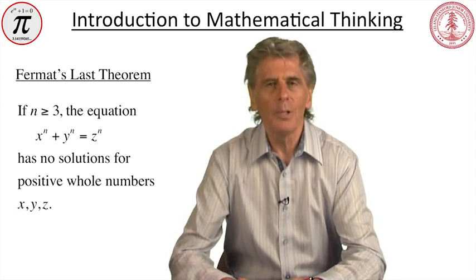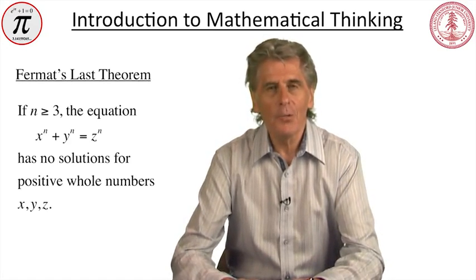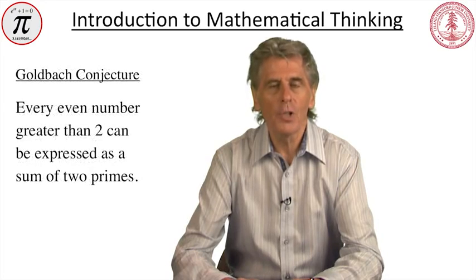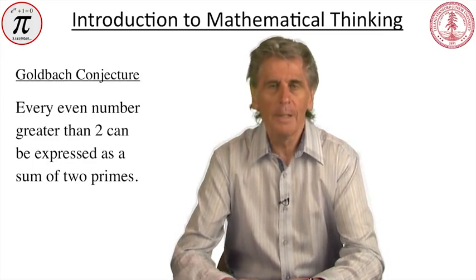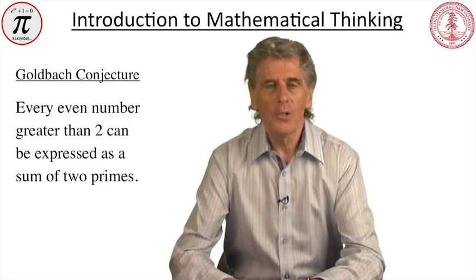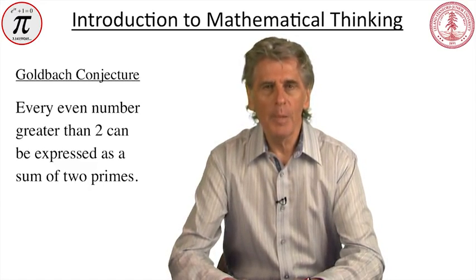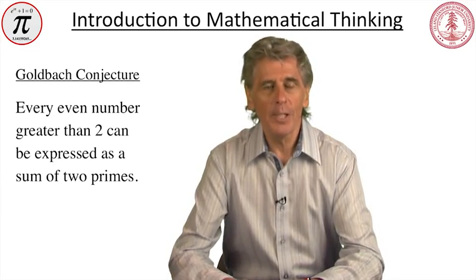Proving a mathematical statement is much more than gathering evidence in its favour. In the mid-18th century, the great Swiss mathematician Leonhard Euler said he believed that every even number beyond two can be expressed as a sum of two primes. This property had been suggested to him by Christian Goldbach and became known as the Goldbach conjecture. It's possible to run computer programs to check the statement for many specific even numbers, and to date — as of 2012 — it's been verified for all numbers up to and beyond 1.6 quintillion.